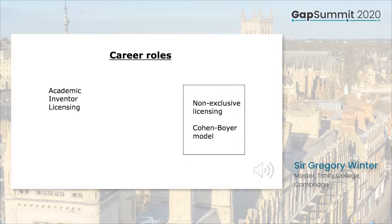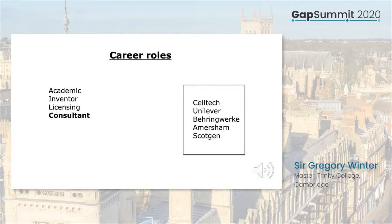So as well as being an academic and an inventor, I'd now been involved in licensing matters. As the technology was highly specialized, some companies taking out a license requested advice in implementing it. I agreed to consult for several companies including Celltech, Unilever, Behringwerke, Amersham, and ScotGen. It generated a nice consulting income for a year or two, and in the meantime I gained some knowledge of how industry works.